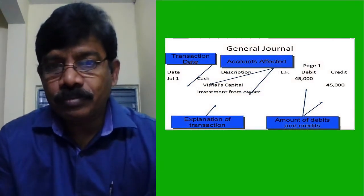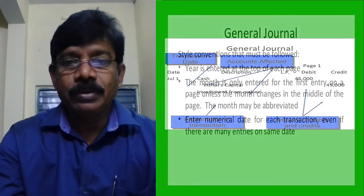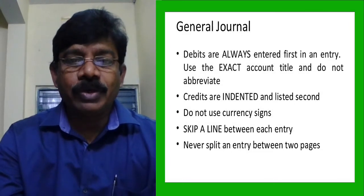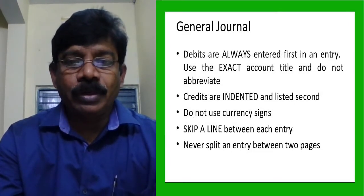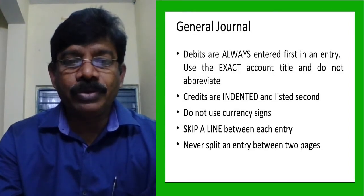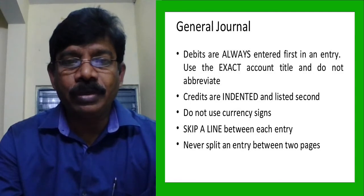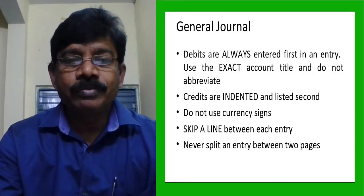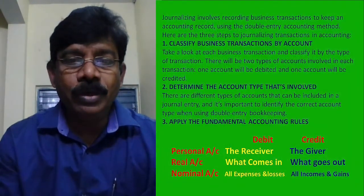The format of a journal entry has already been explained. First we write the debit entry and later the credit entry. We should not use shortcuts or currency symbols. One line should be left between each entry, and an entry should not be split between pages.